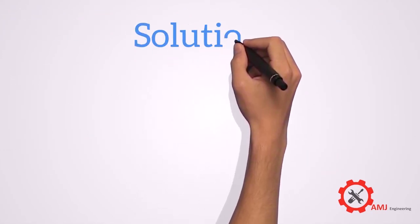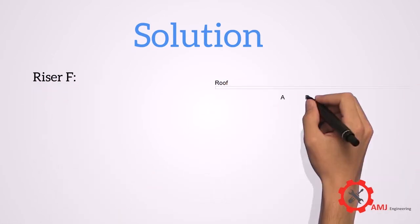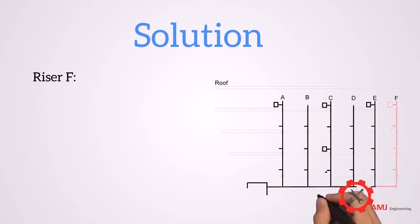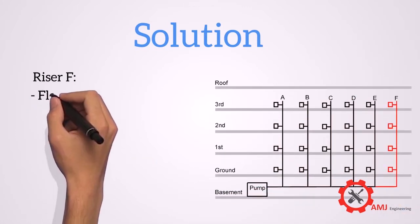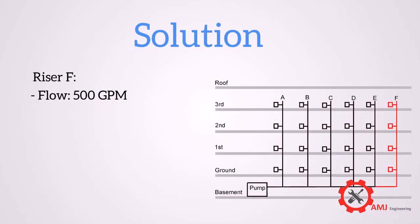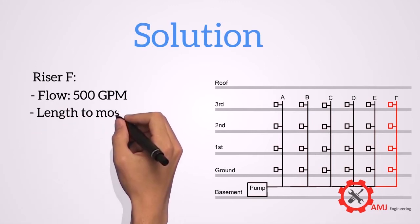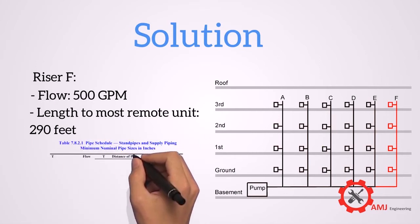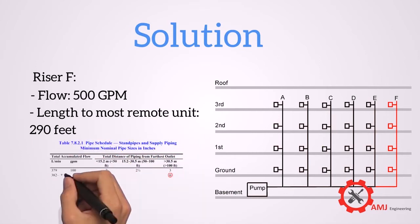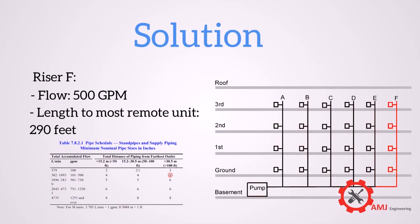Solution is as follows. For riser F, the flow is 500 GPM, being the most remote riser. The length to most remote outlet is 290 feet. So from the table the required pipe size is 6 inches.